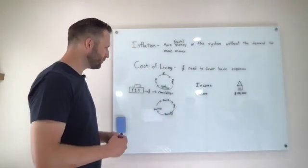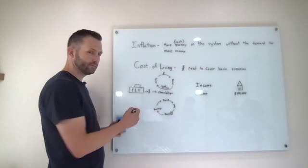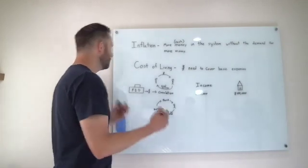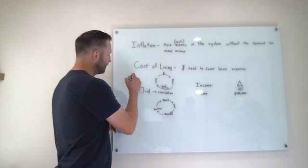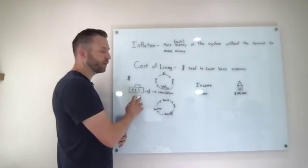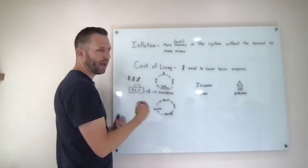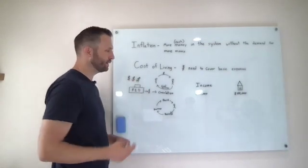Well, the Fed right now in 2021 is printing tons of money. So the Fed prints, let's say there's $1 trillion in circulation. The Fed prints three more trillion and hands it out to banks and people and businesses and everything.